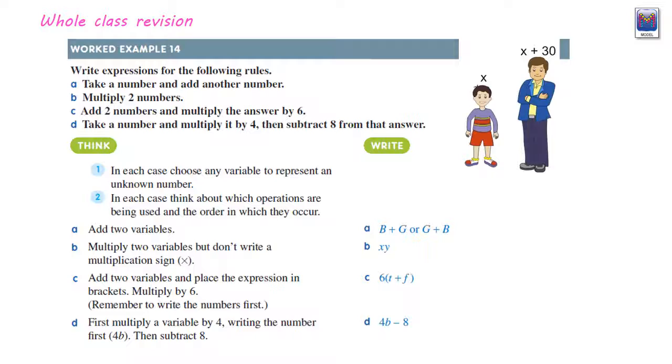Take a number, write expressions for the following rules. Here we go, take a number and add another number. So we don't know what the variables are, we've got to make them up. In this case we've said variables can be b and g. Take a number and add another number, so it's just b plus g.